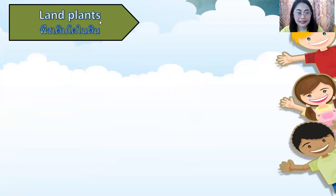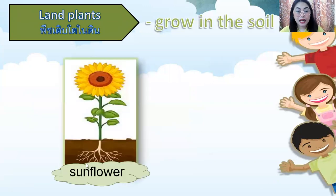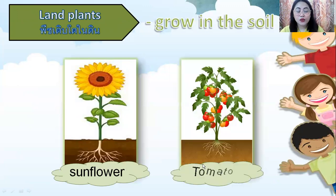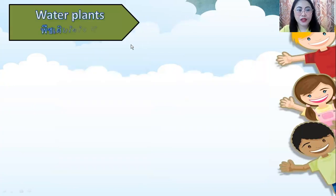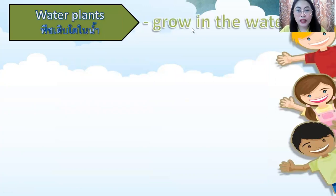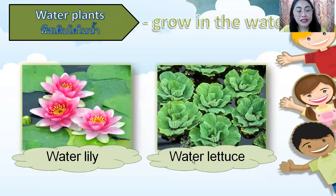Land plants are plants that grow in the soil. Sunflower and tomato grow in the soil — they are called land plants. Water plants are plants that grow in the water. Water leaf and water lettuce are water plants; they grow in the water.